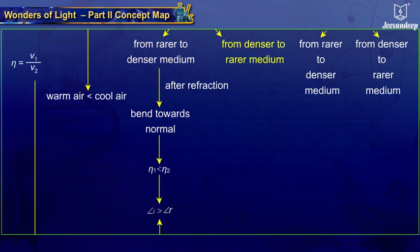When light travels from a denser to a rarer medium, the refracted ray bends away from the normal. The refractive index of the denser medium is greater than that of the rarer medium. In this case, the angle of incidence is less than the angle of refraction.